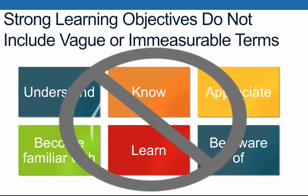Use the Bloom's Wheel provided to you to help you select strong action verbs that will describe exactly what the learner will do. This will help to ensure that you are writing specific, measurable, and observable objectives that will provide a solid foundation for your course design. This concludes this video. Thanks for watching.